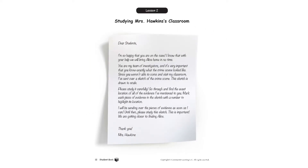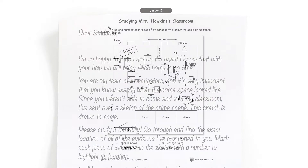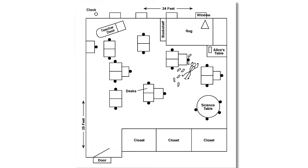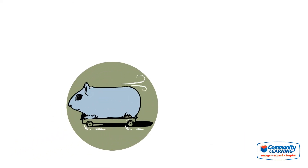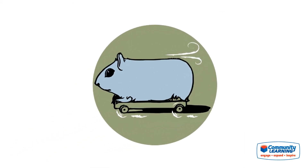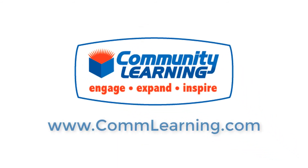Activity Three: Studying Mrs. Hawkins's Classroom. The instructor will open up the mail for Mrs. Hawkins to reveal a letter and a crime scene sketch. Read the letter aloud to the class, study the enclosed crime scene sketch with your class, and number each piece of evidence to highlight its location. Thank you for watching Rogue Rodent Mystery, Lesson 2. For any further questions, please consult our website.